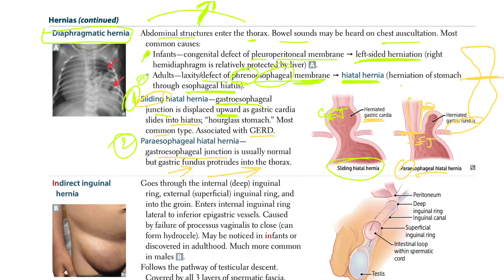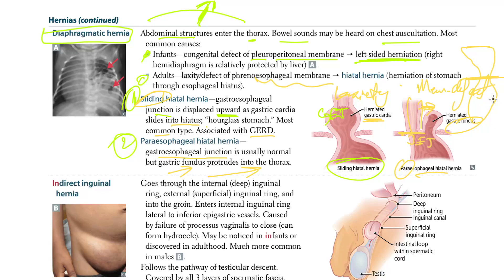One key distinction: in sliding hiatal hernia you have laxity of the phrenoesophageal membrane, whereas in paraesophageal hernia you have an actual membrane defect of the phrenoesophageal membrane.